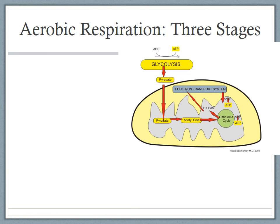Aerobic respiration takes place in three stages, which we will list and then go into more detail. This picture shows a mitochondria. The outer membrane is in dark black, and the inner membrane separates the tan area — the inner membrane space — from the blue area, which represents the matrix. We'll go over where each stage is happening.